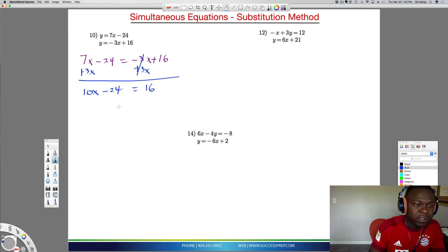Now we need to get rid of this minus 24. The opposite of minus 24 is plus 24, so I add that on both sides. This goes away. 16 plus 24 is going to be 40. So this is 10x equals 40. I divide by 10 on both sides, so x is equal to 4. We just solved for x as 4.